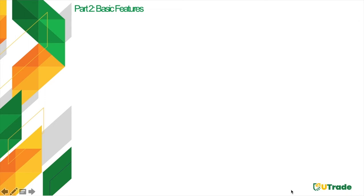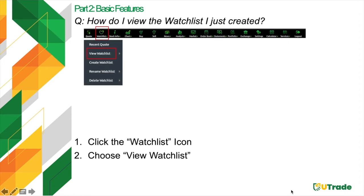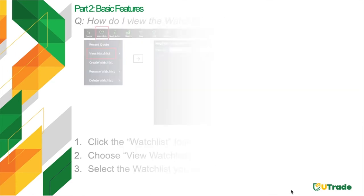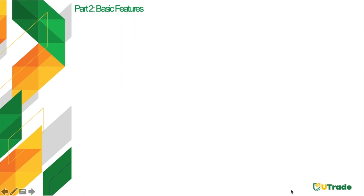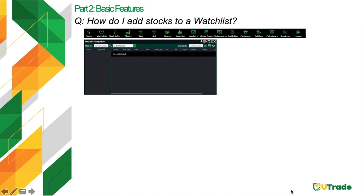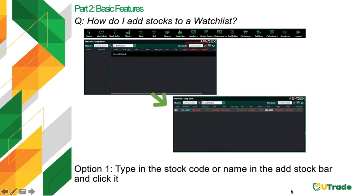To view your watchlist, click the watchlist icon again, choose the dropdown option View Watchlist, then select the watchlist you want to view. To add stocks, you have three ways. Option one: type the stock code or name in the add stock bar and click it — for example, JFC will be automatically added. Option two: hover your mouse over a stock symbol or code, right-click, and choose Add to Watchlist, then select the watchlist and click Add.